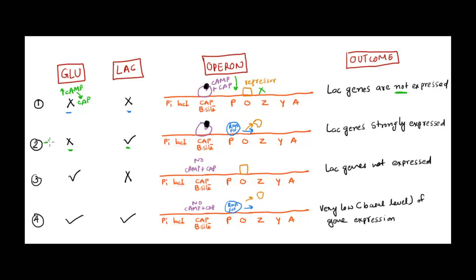Second scenario: no glucose but lactose present — this is the negative control example from the last video. No glucose means high cyclic AMP, which binds CAP, and the complex sits at the CAP binding site. Lactose present means allolactose is made and goes and binds to the repressor, removing it. Now two things happen: repressor is removed and CAP complex is bound at the activator site. This signals RNA polymerase to bind with high affinity and transcribe at a really high level — lac genes are strongly expressed.